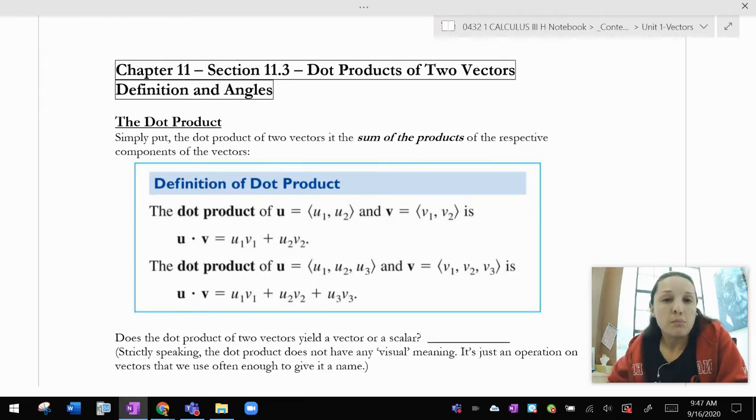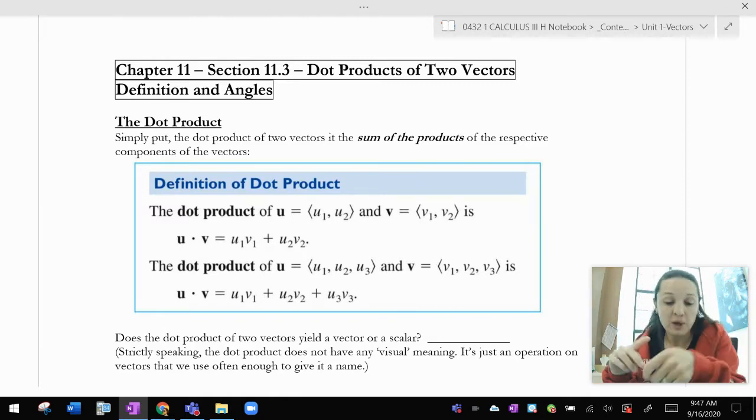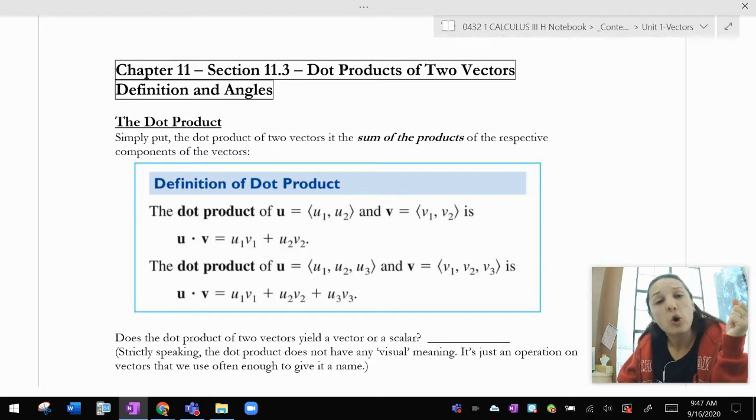You can't technically multiply vectors in the strict sense of the word, but you can create a specialized product of vectors. And that is called the dot product. So you can do something called finding the dot product of two vectors. It has a couple different useful applications and a formula that we use a lot. So that's what we're going to talk about today.